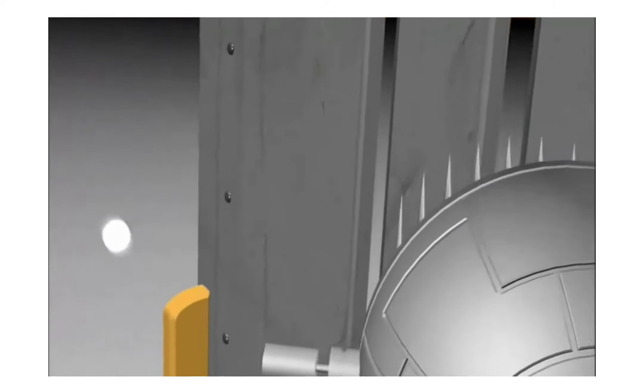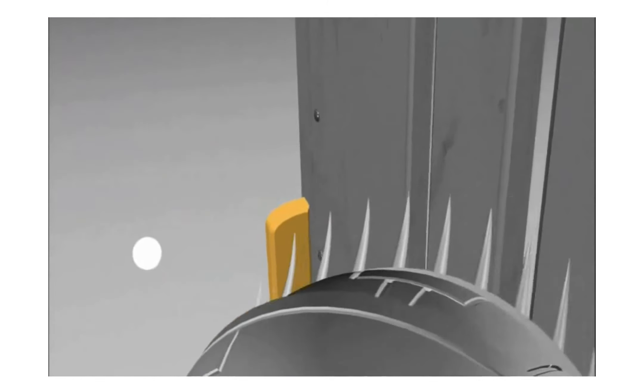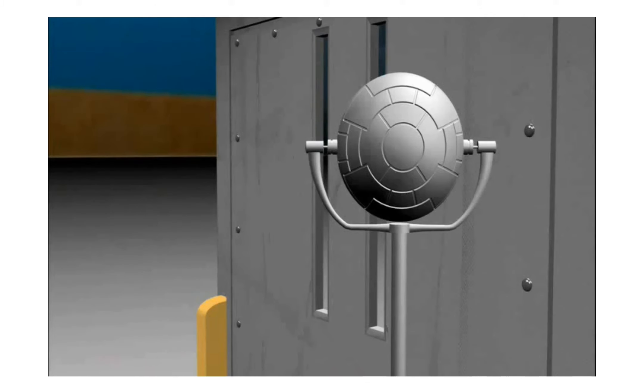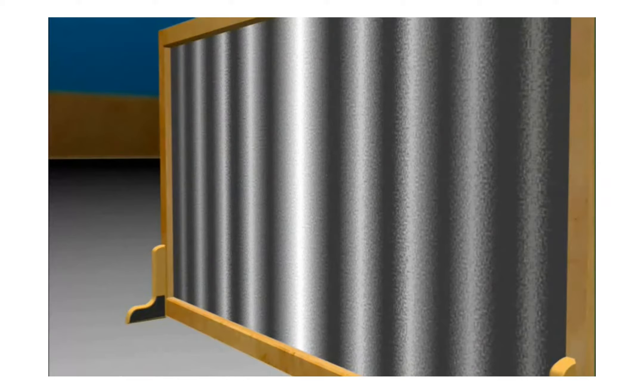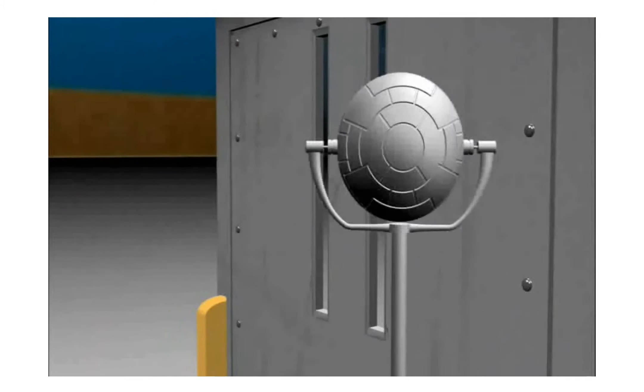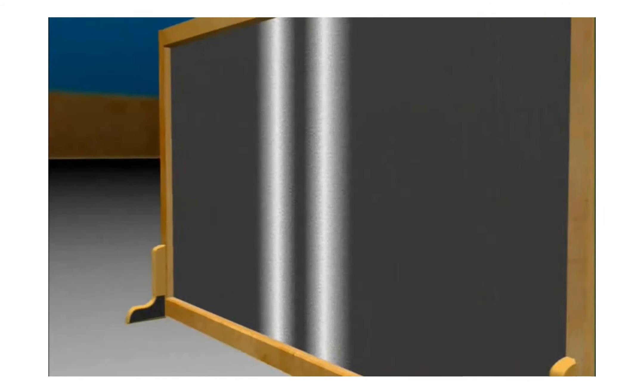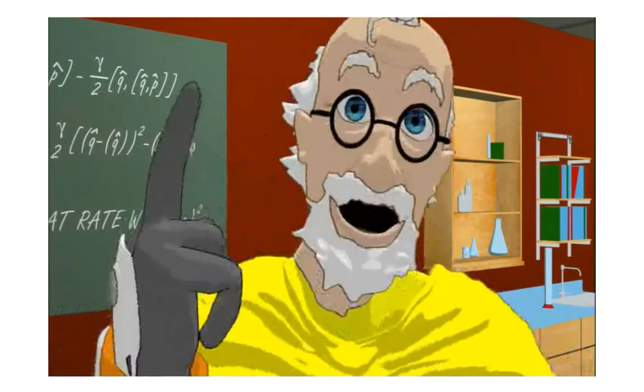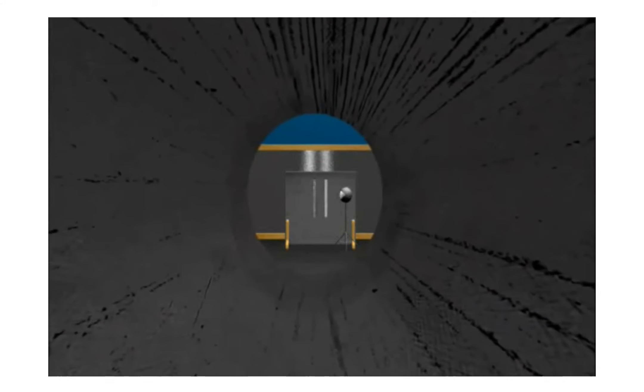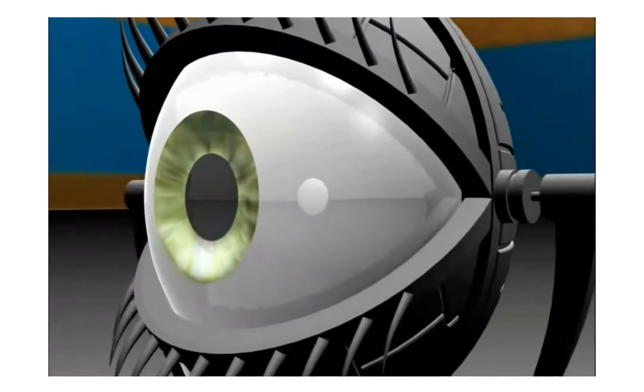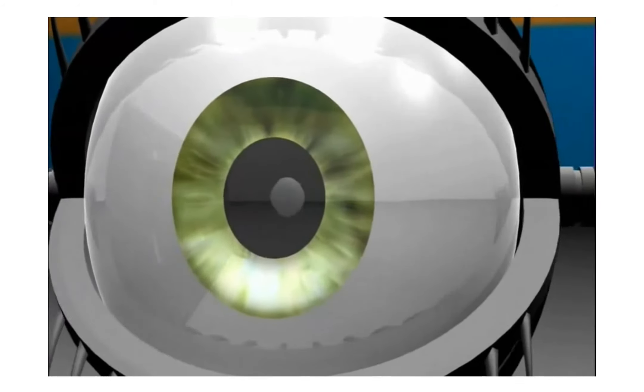But, the quantum world is far more mysterious than they could have imagined. When they observed, the electron went back to behaving like a little marble. It produced a pattern of two bands, not an interference pattern of many. The very act of measuring, or observing, which slit it went through, meant it only went through one, not both. The electron decided to act differently, as though it was aware it was being watched.